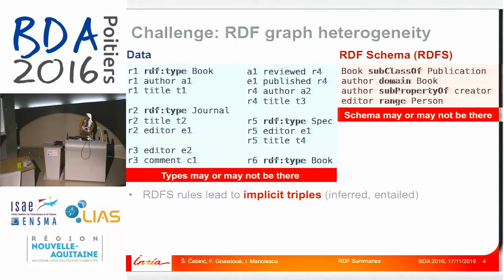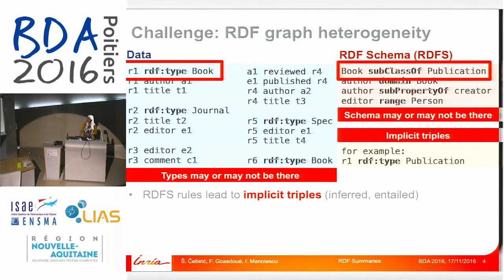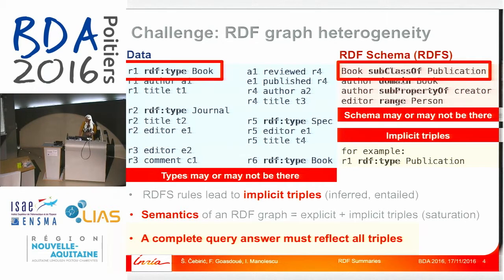Additionally, due to the existence of schema constraints, other than explicit physical triples, there may be some implicit triples which are inferred or entailed. For example, if we know that R1 is of type book, and book is a subclass of publication, then we can infer that R1 is also of type publication. Implicit triples are important because together with explicit triples they form the semantics — the meaning of an RDF graph — and a complete query answer must reflect all triples, whether explicit or implicit. So our approach has to take this into account.